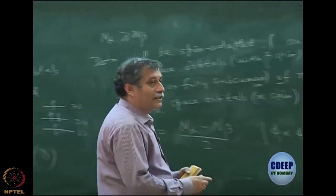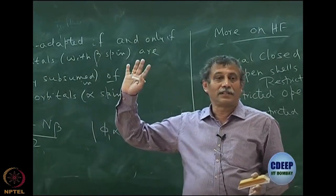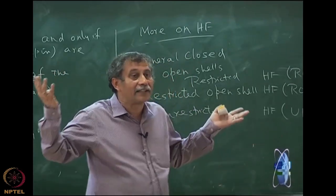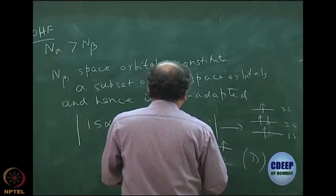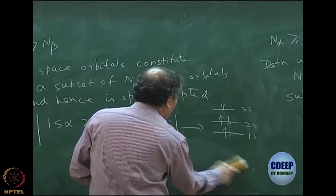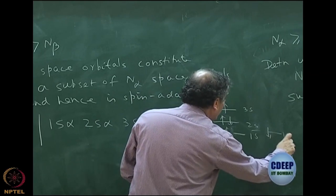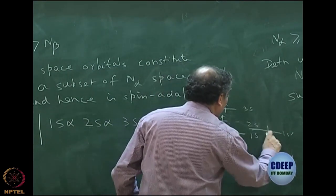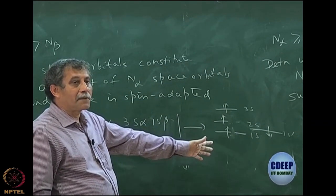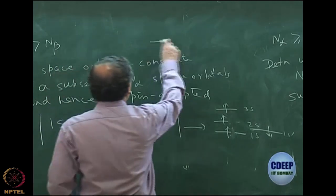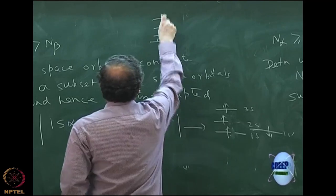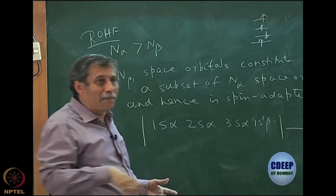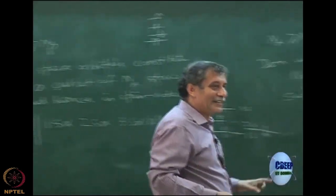Unrestricted Hartree-Fock by definition has no such restrictions. The n_beta space orbitals need not be a subset of n_alpha. For example, if beta has a 1s' orbital slightly different in energy from the alpha 1s, then it is not spin-adapted. By the variational theorem, if you have more flexibility, energy will be lower. So if you want a lower energy, you should do UHF.